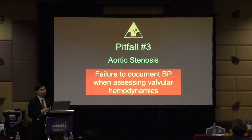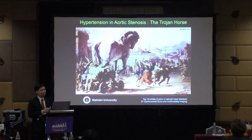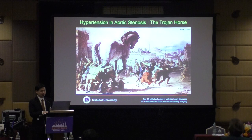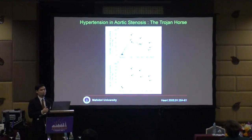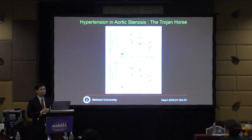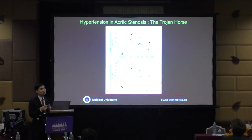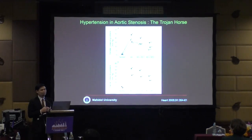Pitfall number three is failure to document blood pressure when assessing valvular hemodynamics. Hypertension and aortic stenosis is like a Trojan horse — it covers bad things inside. When you have high afterload, the gradient across the aortic valve can be falsely low. You must mention the blood pressure every time you record a gradient. This is especially true in the setting of paradoxical low-flow, low-gradient aortic stenosis.